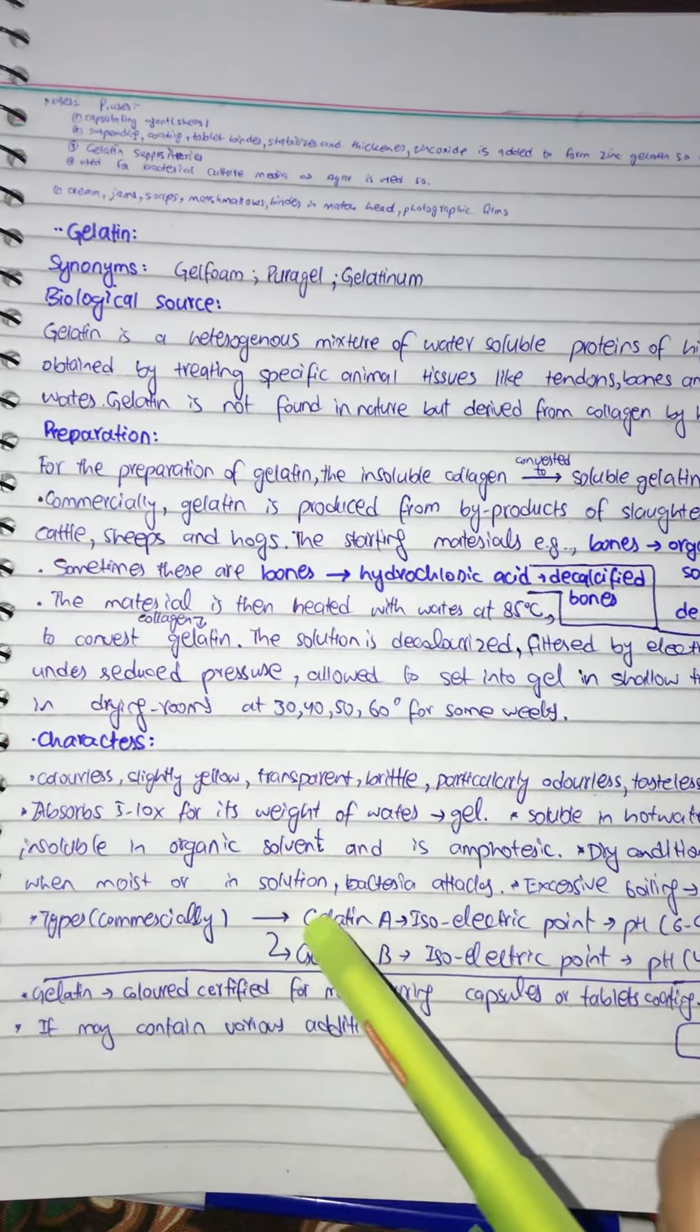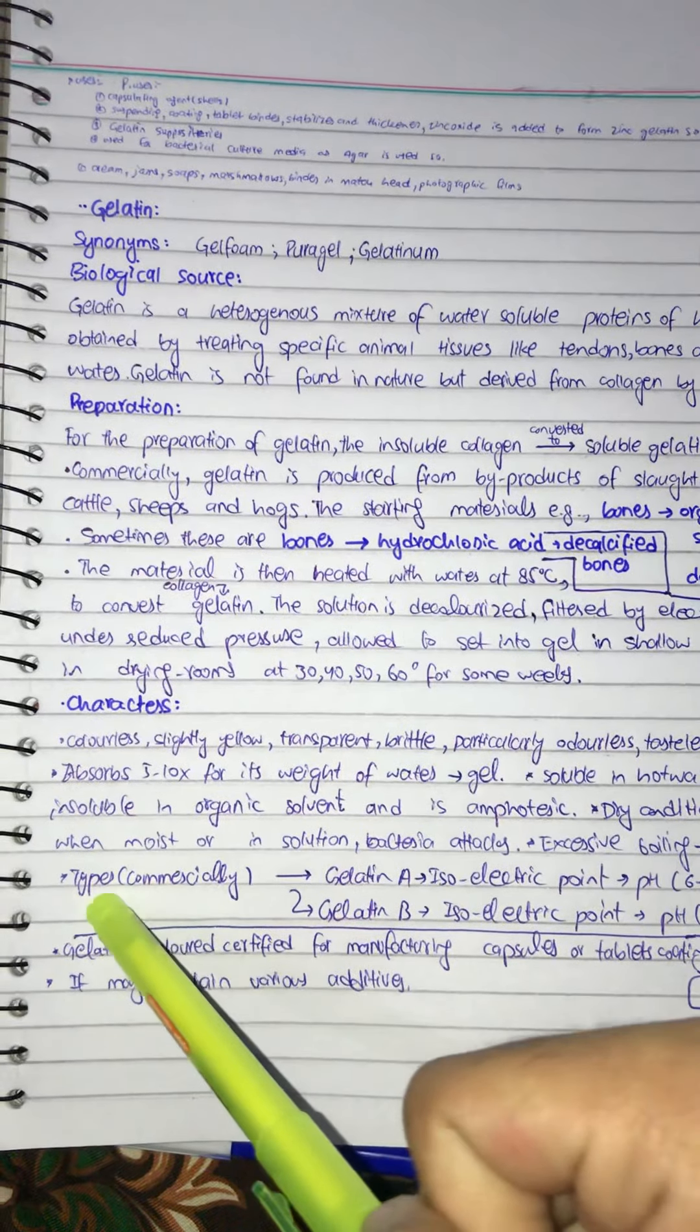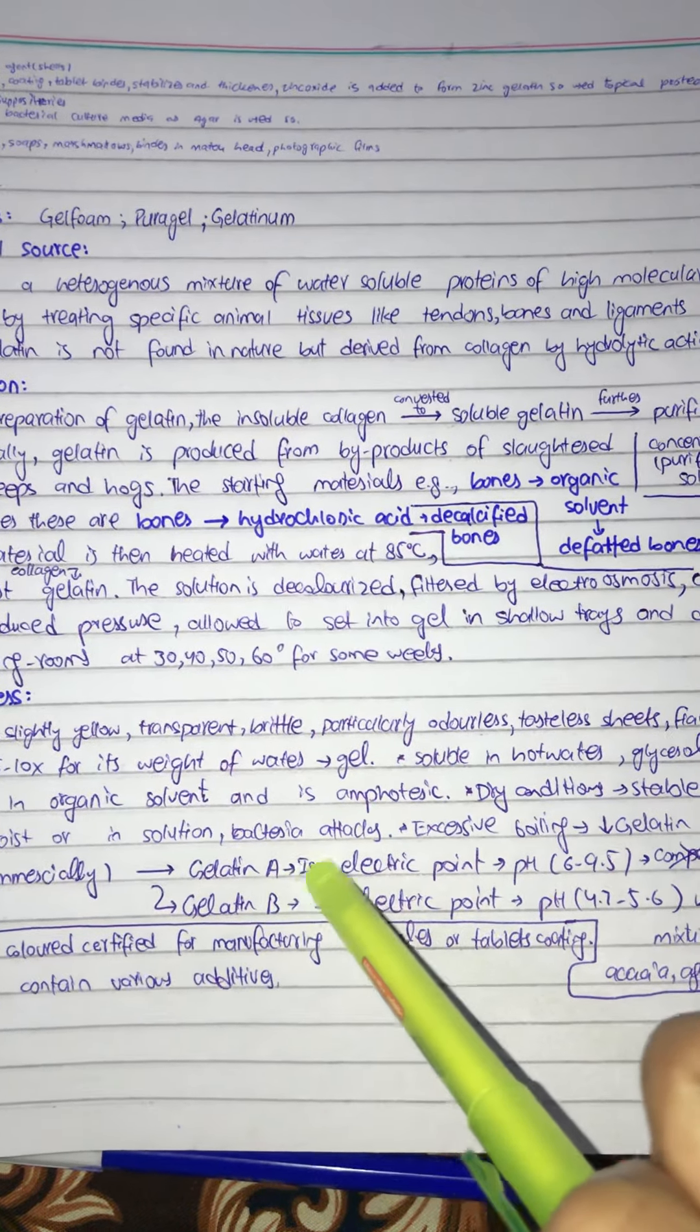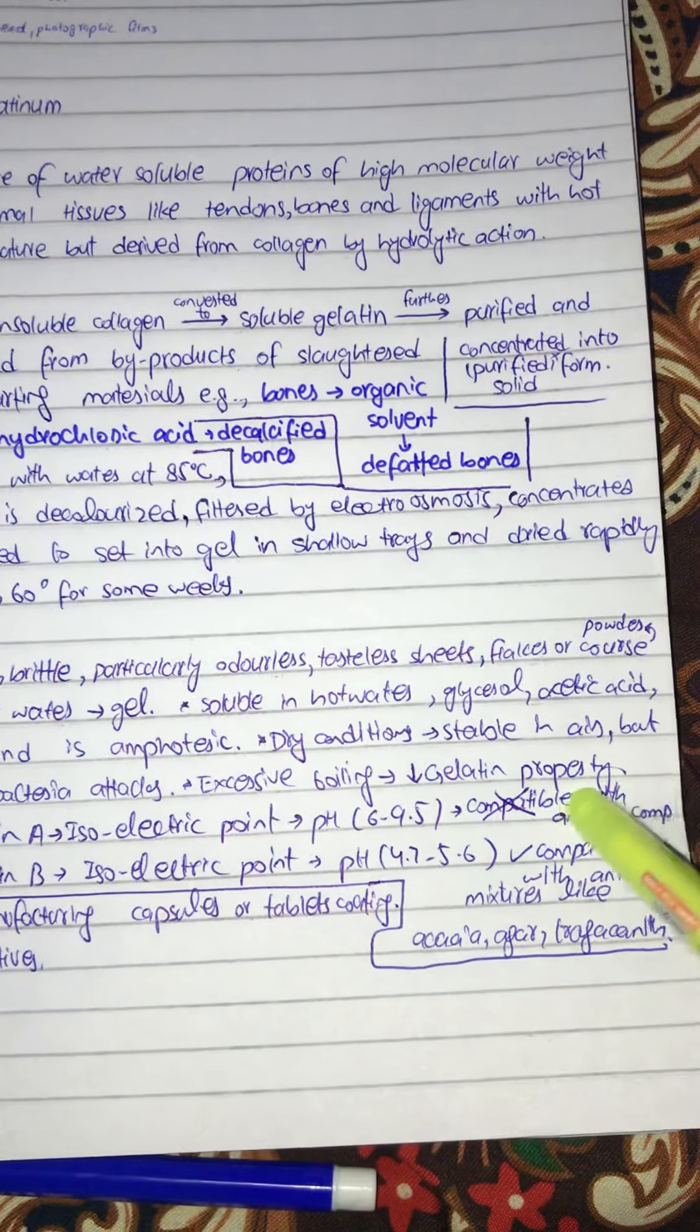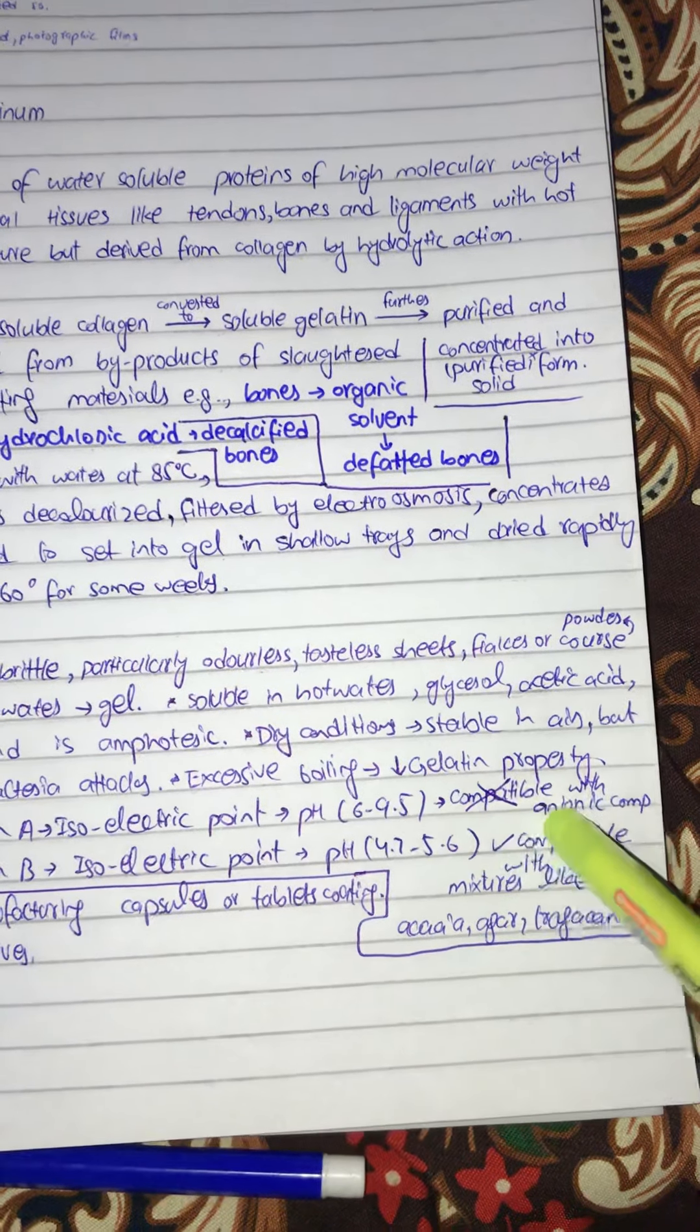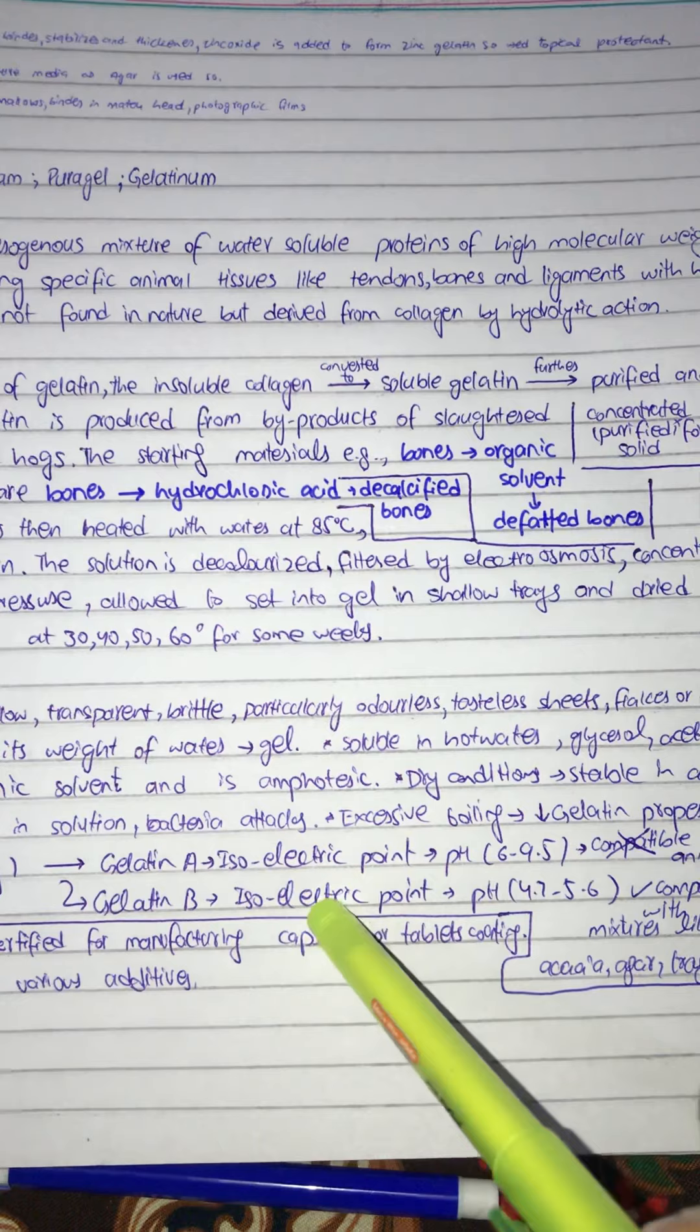There are two types commercially: gelatin Type A and Type B. Type A gelatin has the isoelectric point at pH 6 to 9.5 and it is not compatible with anionic components or anionic mixtures like agar and tragacanth.